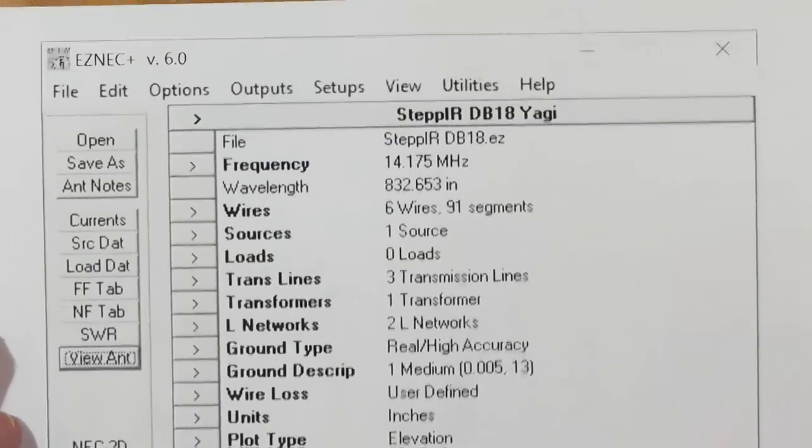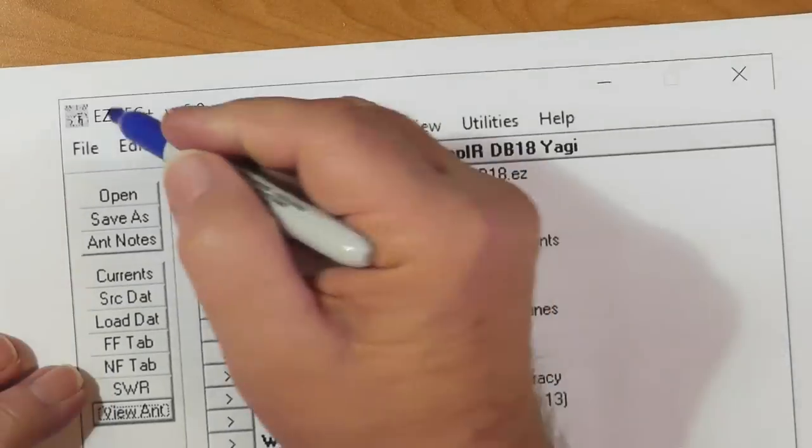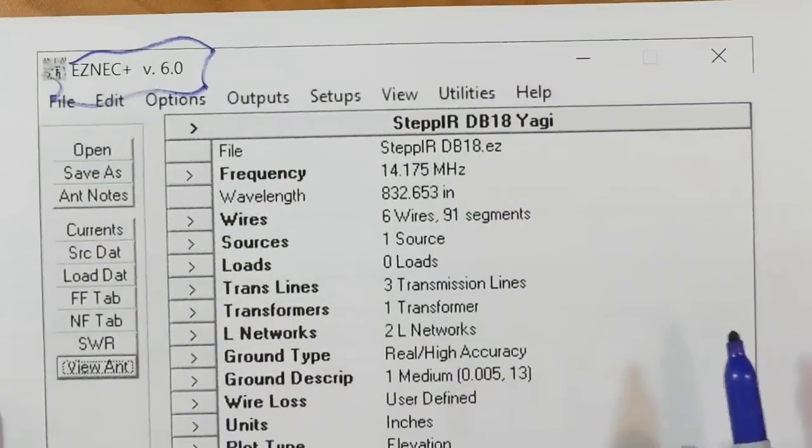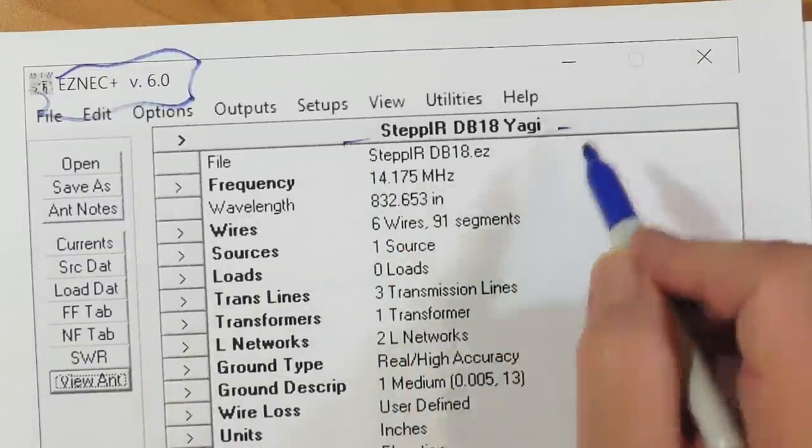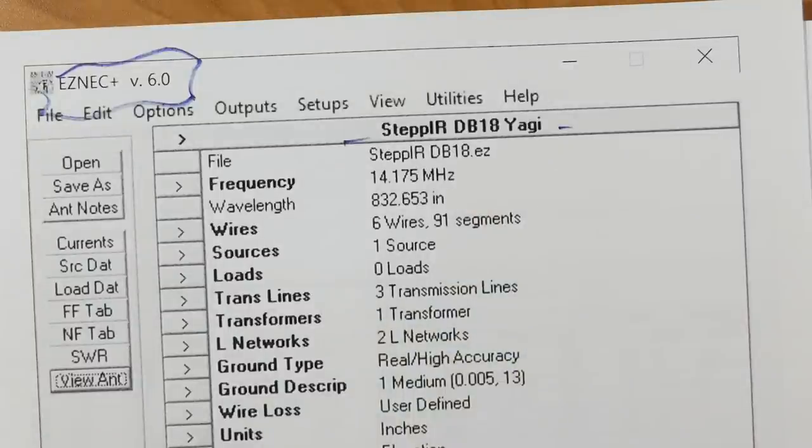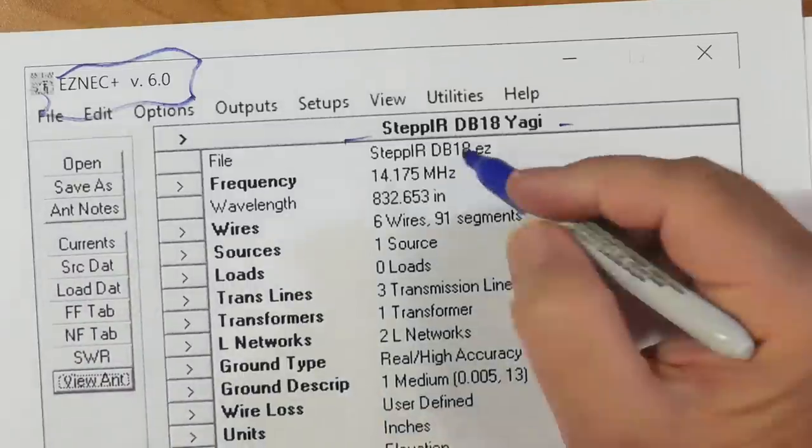Now, let's turn away from the theory and look at Brad's situation. This right here is EZNEC Plus version 6, and it's a StepIR DB18 Yagi. Now, what is the source of this model? Brad sent it to me, and I suspect that it came from StepIR.